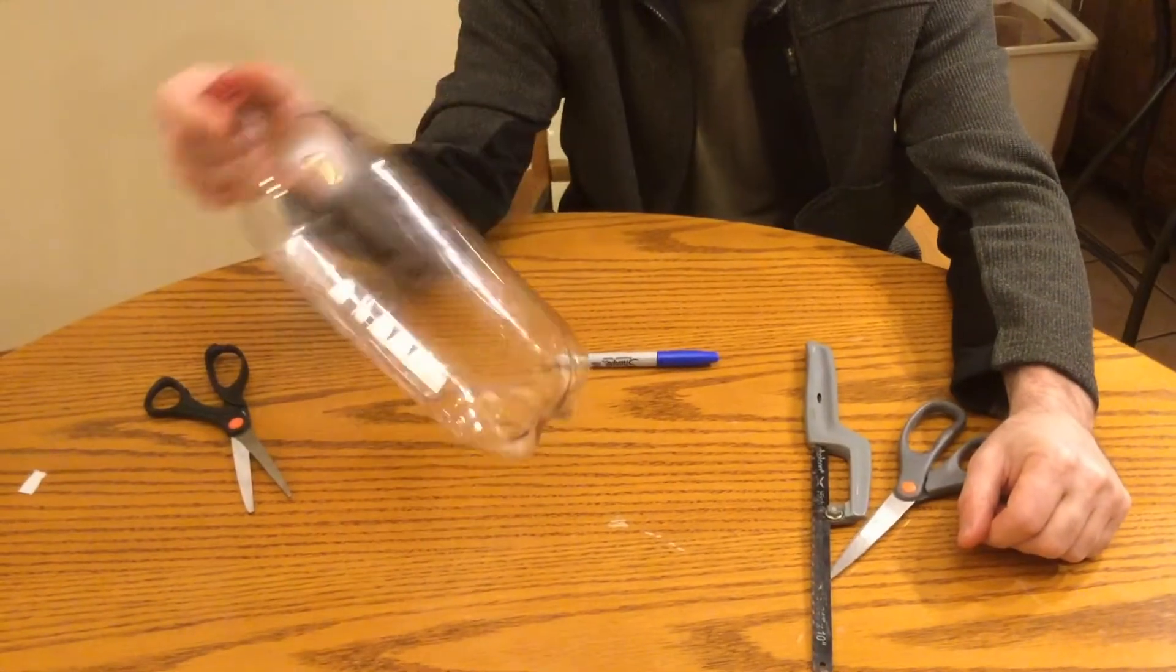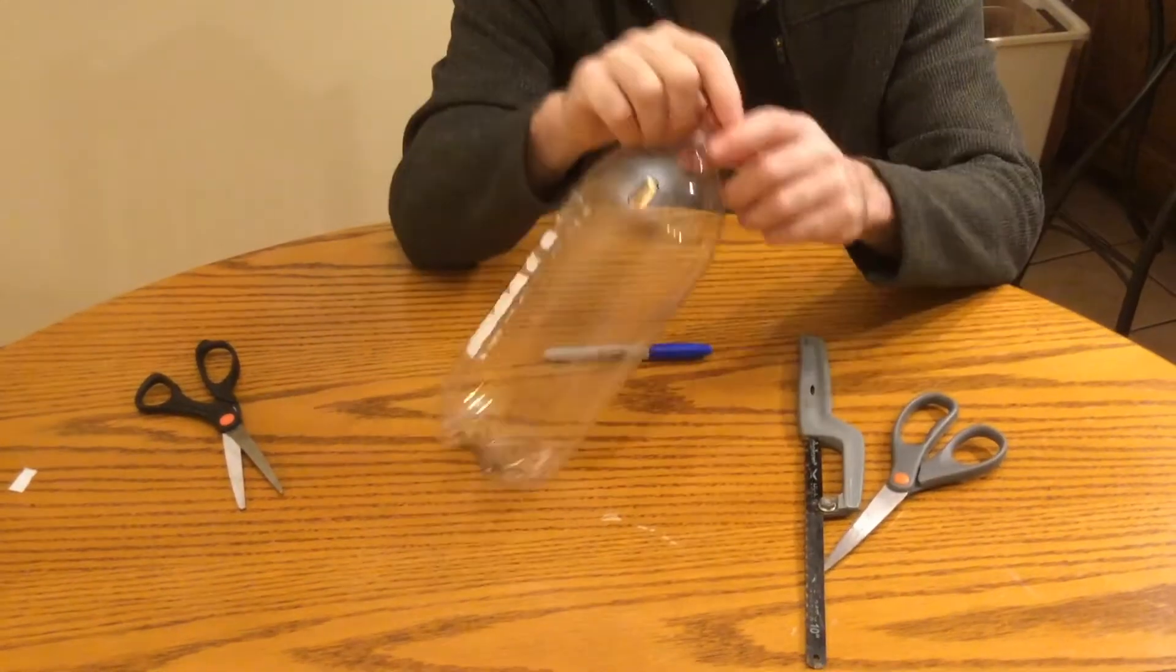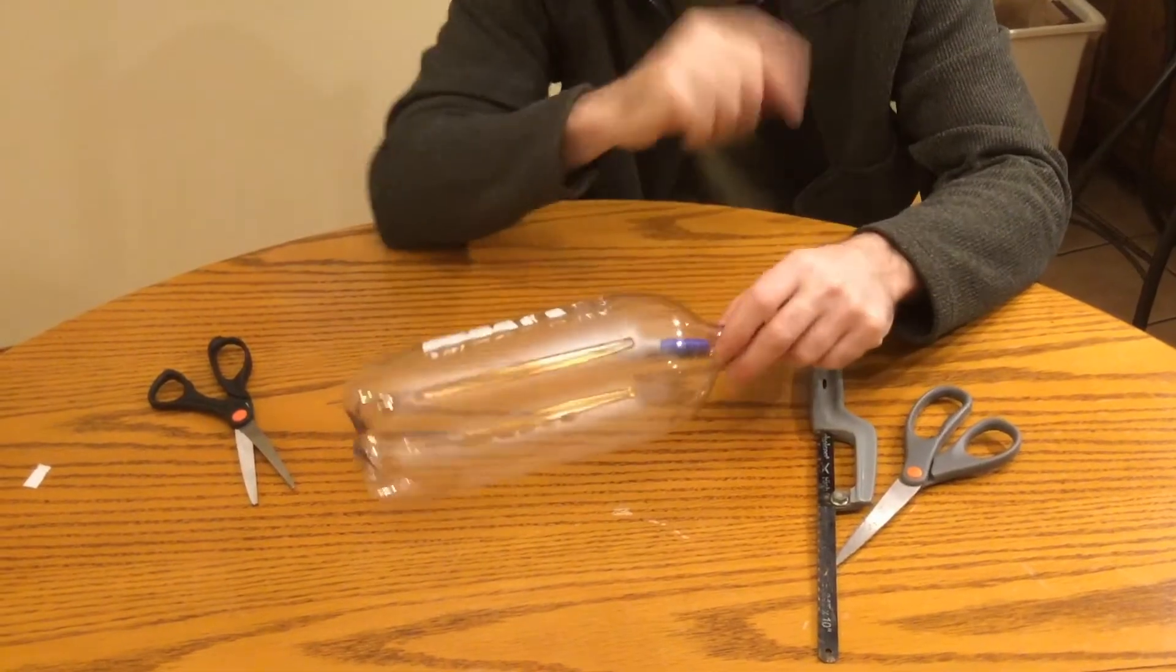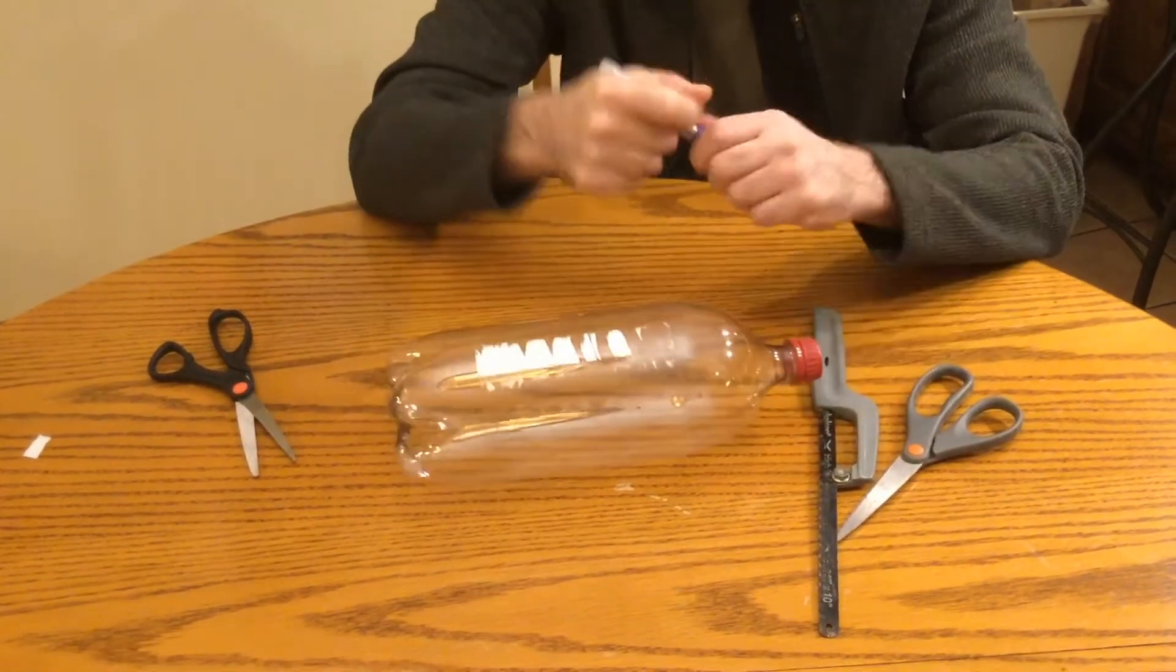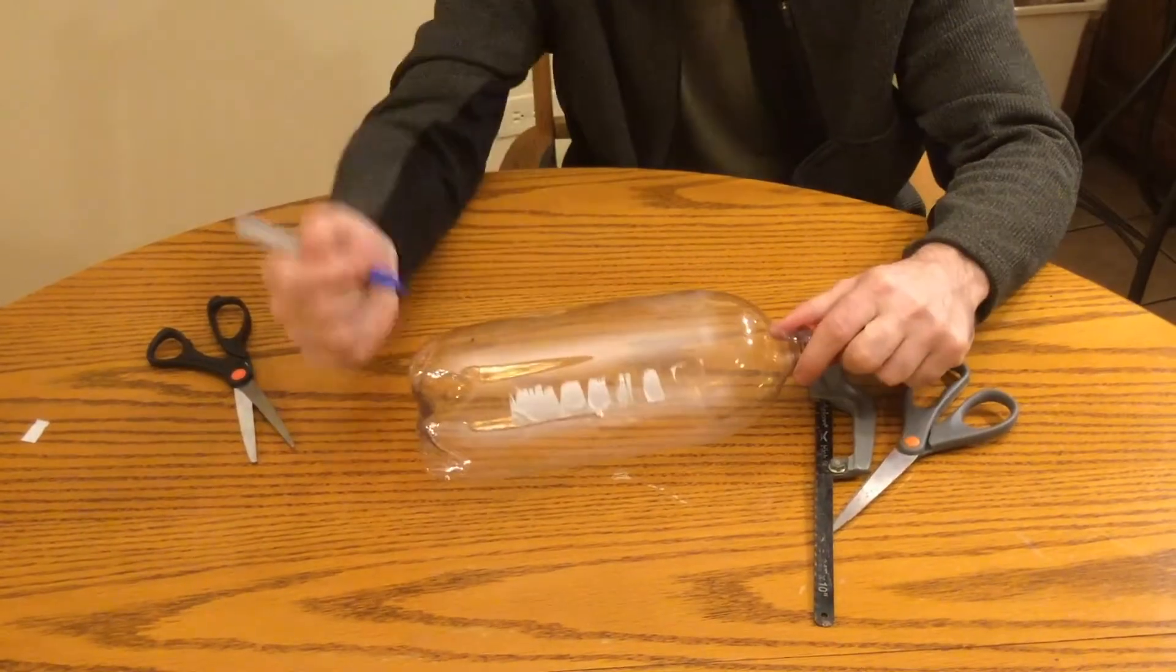To prepare your two-liter bottles for this next lesson, you'll want to cut off the bottom of them. To do that, you can use a hacksaw and scissors. Do not use an exacto blade and don't start with scissors.